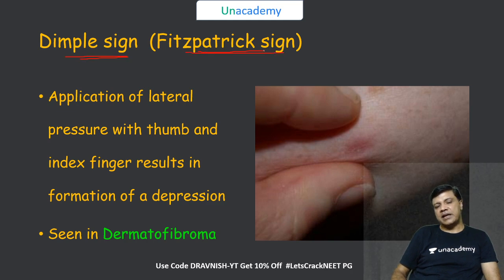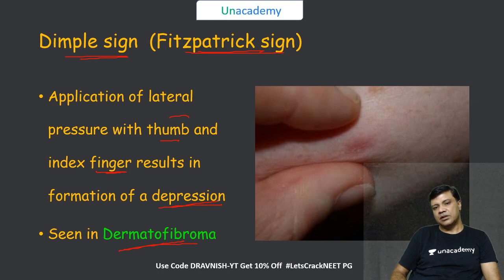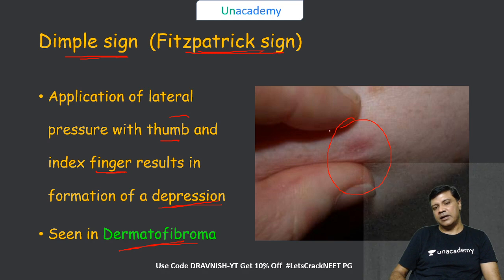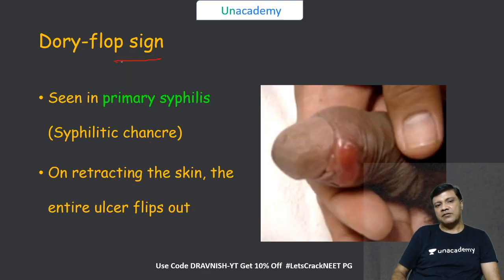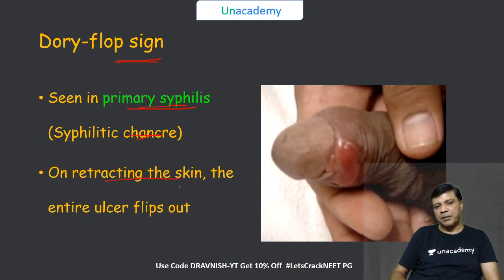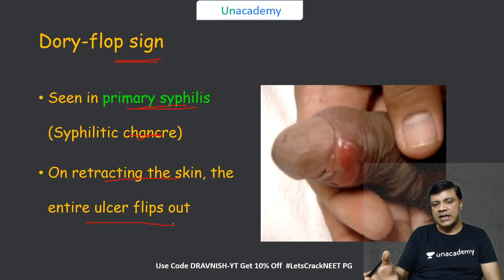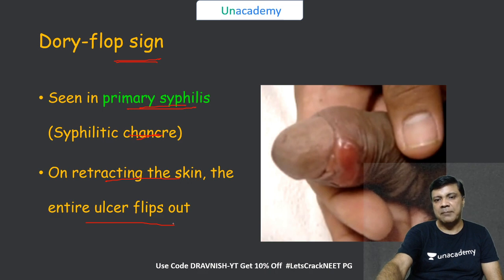The dimple sign or Fitzpatrick's sign is a feature of dermatofibroma. On application of lateral pressure with the thumb and index finger, a depression or dimple forms as you try to displace the lesion. The doryflop sign is a feature of primary syphilis, where on retraction of the prepuce skin the entire ulcer flips out, but is difficult to slip back due to induration of the ulcer.